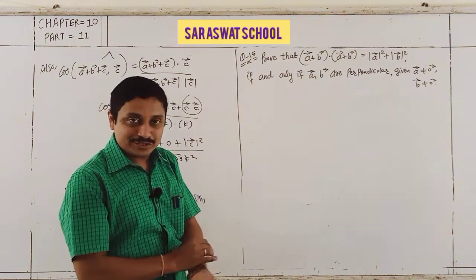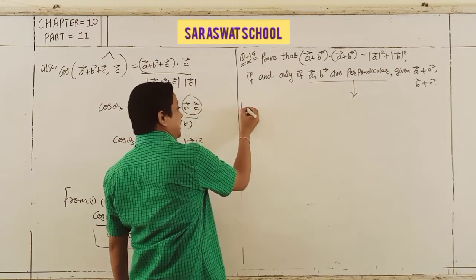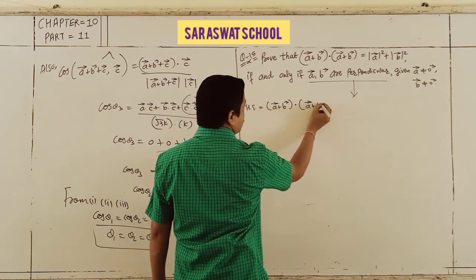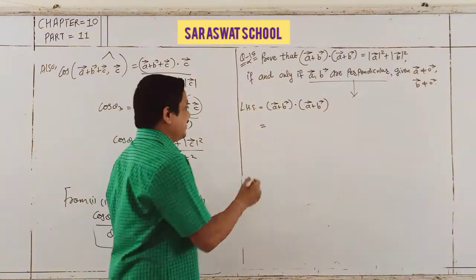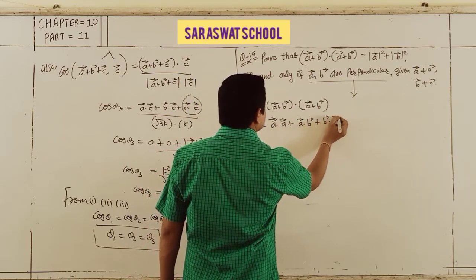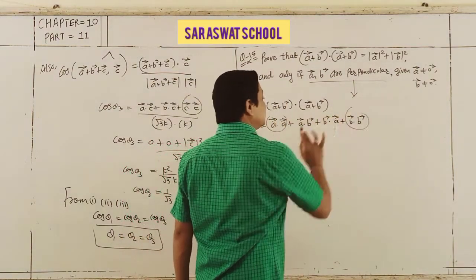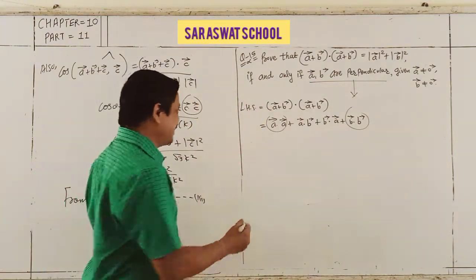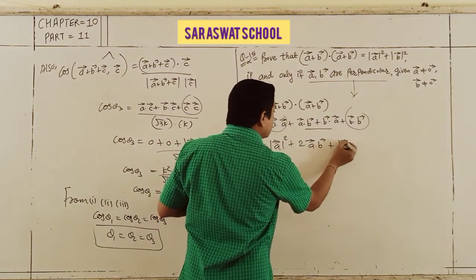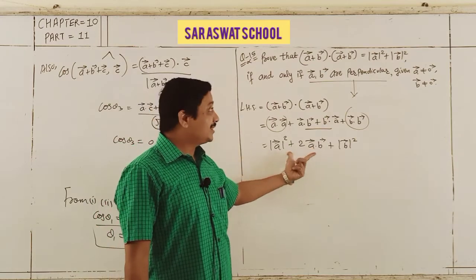Question 15: Prove that (A + B)·(A + B) = |A|² + |B|² if and only if A and B are perpendicular to each other, for A non-zero and B non-zero. Since perpendicular means dot product = 0, I start with the LHS.